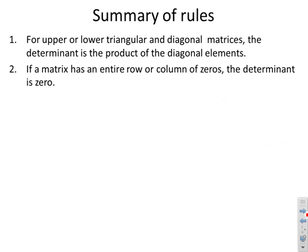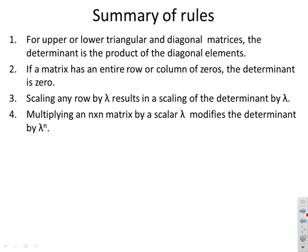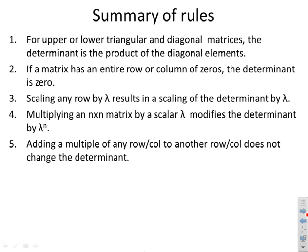First, a summary of the rules. If you've got an upper or lower triangular matrix, the determinant is the product of the diagonal elements. If a matrix has got an entire row or column of zeros then the determinant is zero. If you scale any row by lambda then you scale the determinant by lambda. If you scale the whole matrix by lambda then you change the determinant by lambda to the n. If you add a multiple of any row or column to another row or column, this does not change the determinant.